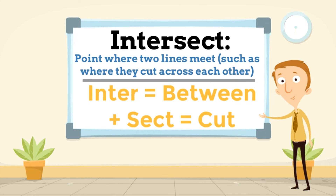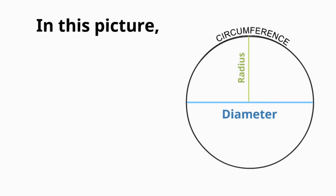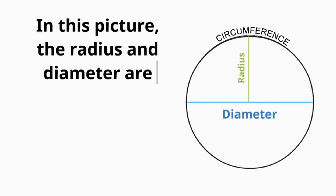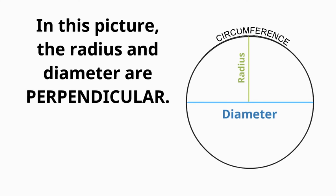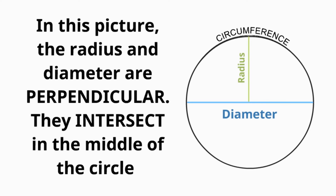Intersect, meaning the point where two lines meet, such as where they cut across each other. Inter, meaning between, plus sect, meaning cut, make intersect. In this picture, the radius and the diameter are perpendicular. They intersect in the middle of the circle.